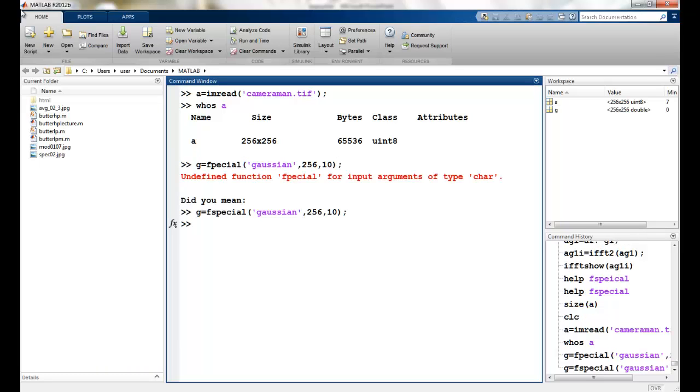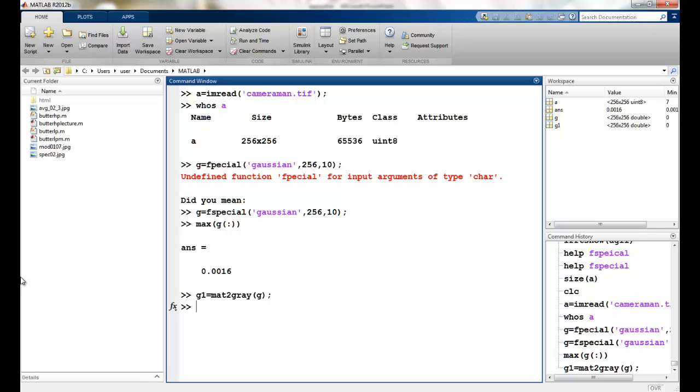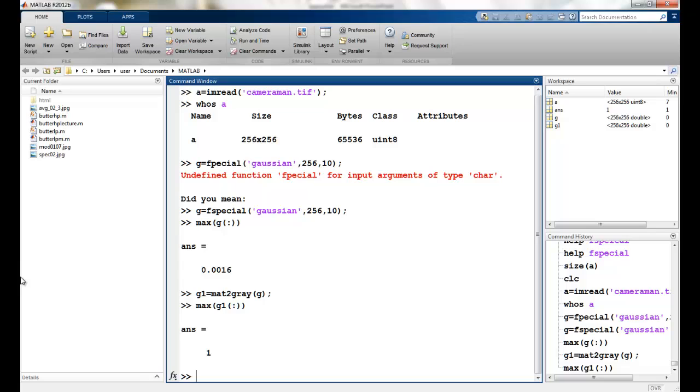Missed out an S there. Okay. Now let's see the maximum value that we have for this filter. You can see that the result is very small here, so we need to scale it so that the center value is 1. So for that, I just have this inbuilt function mat2gray. If I apply it on this G, I can again check the value for G1, and you can see the value is now 1.